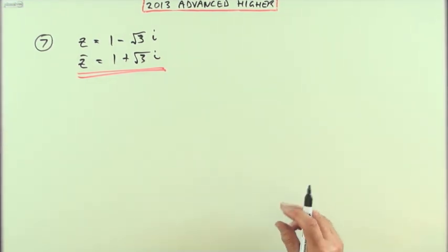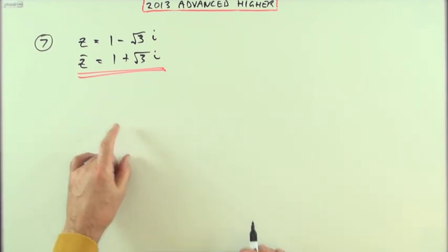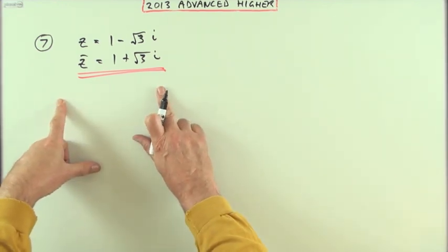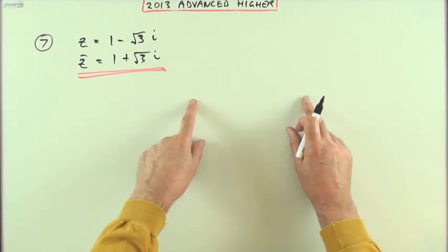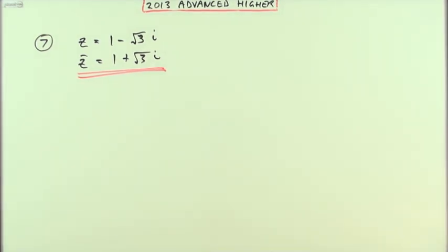And then it says write down the square of that conjugate in polar form. So you get two choices: you can either square it keeping it in its rectangular form, or you could change it to polar form and then just use DeMoivre's theorem to form the square. But I'll just put it into polar form straight away.